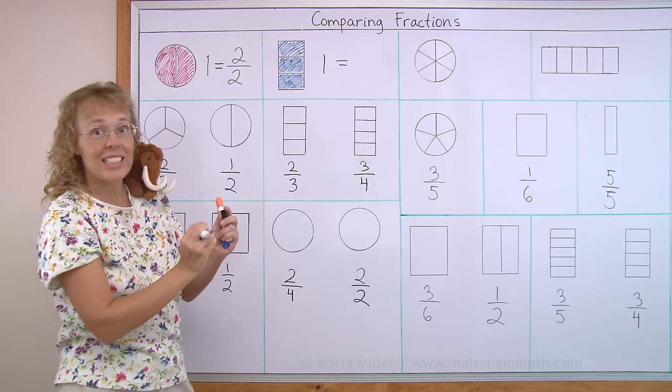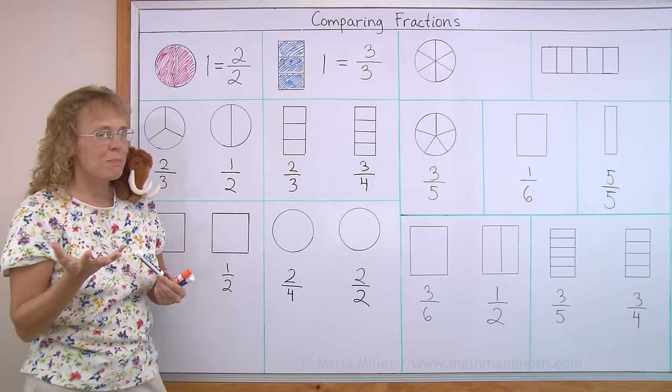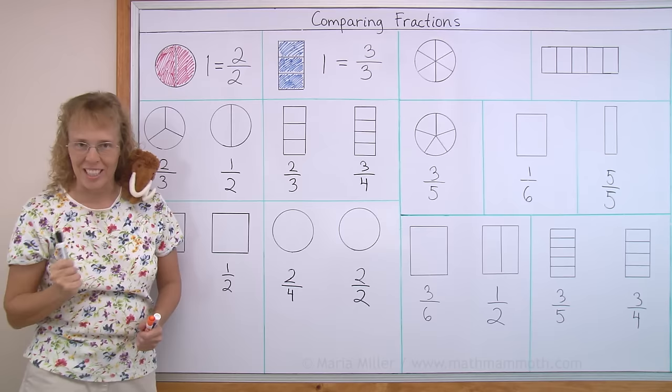How about here? There's one whole rectangle, and how do we write it as a fraction? As you can see, three parts in total, three are colored, and we read it as three thirds.